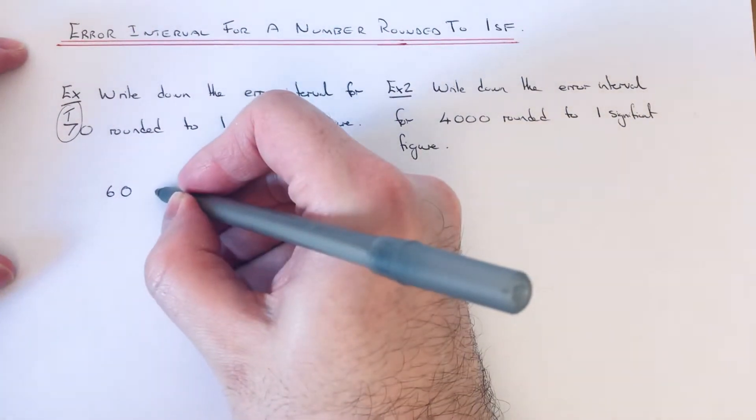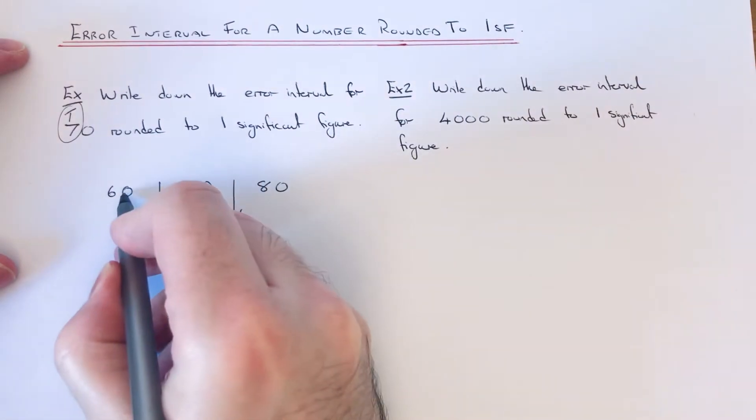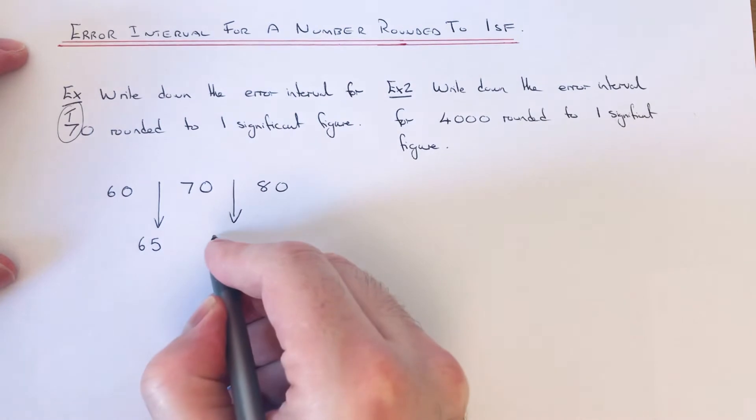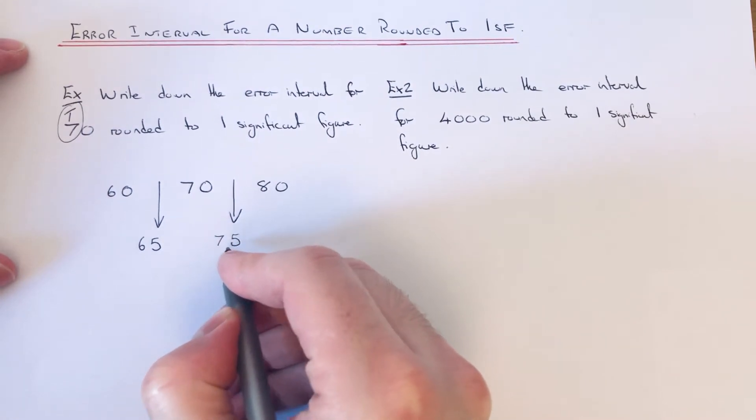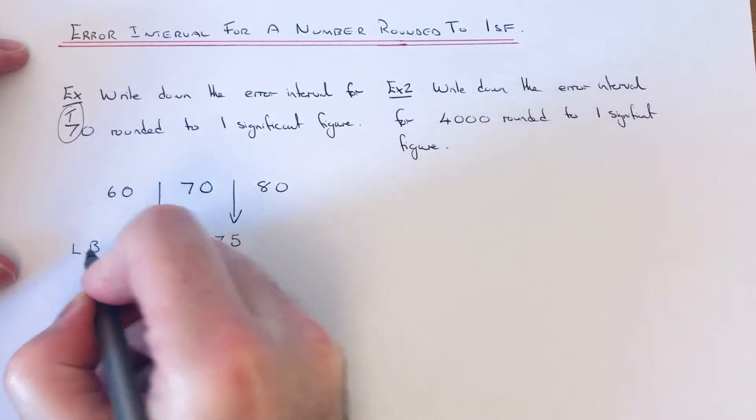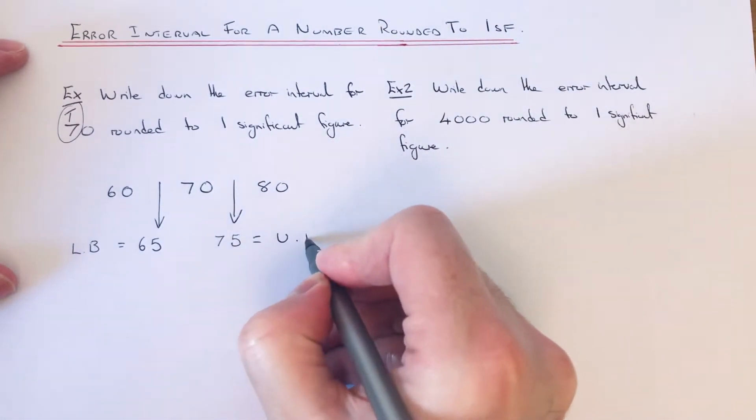All we need to do now is get the halfway points. Halfway between 60 and 70 is 65. Halfway between 70 and 80 is 75. So this number here is our lower bound, that's the lowest number it could be, and 75 is our upper bound.